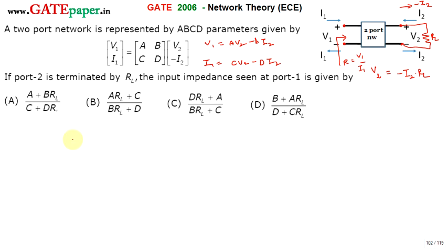R is defined as R1, resistance at port 1, is equal to V1 divided by I1. V1 is equal to AV2 minus BI2, whereas I1 is equal to CV2 minus DI2.